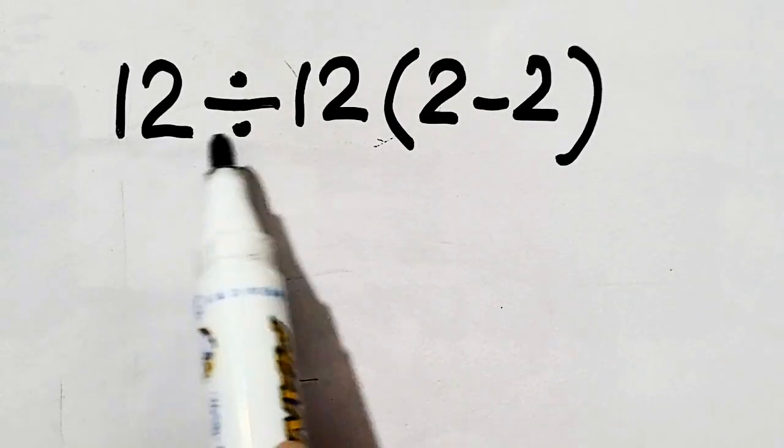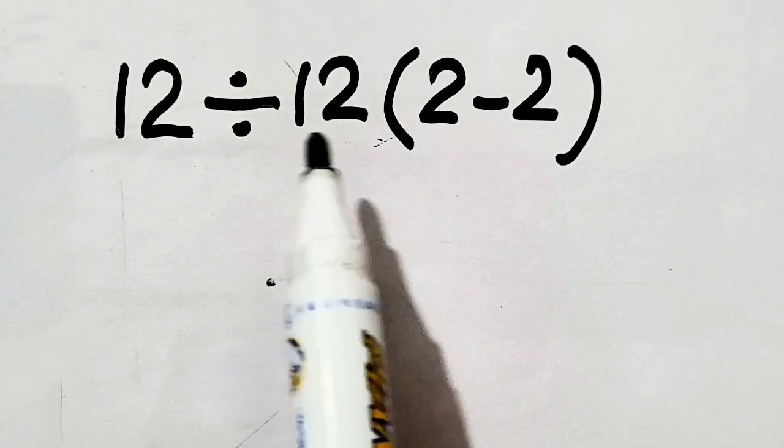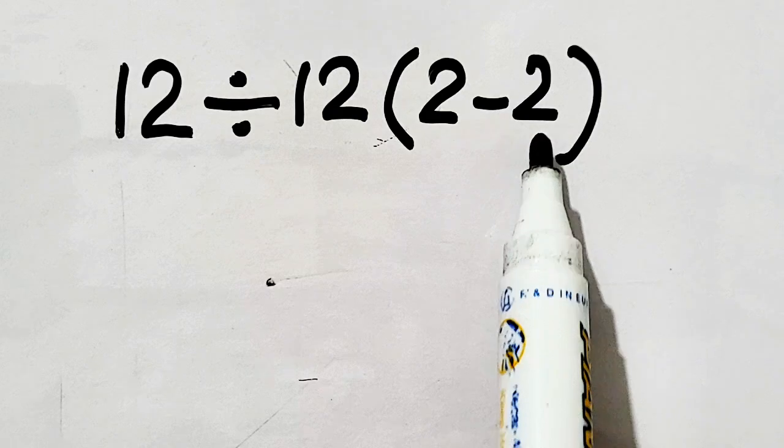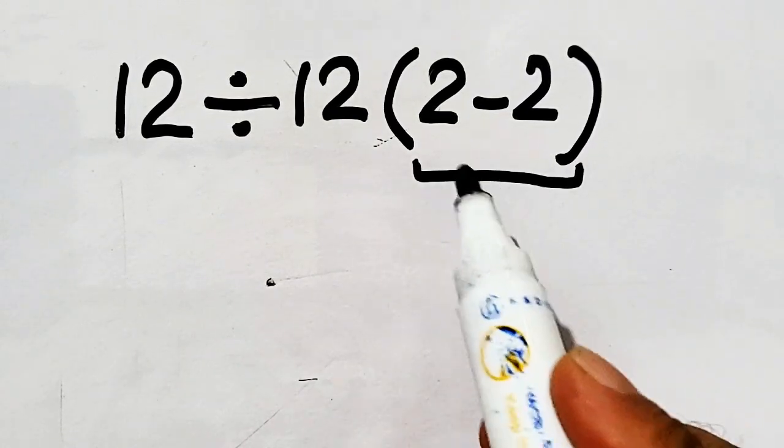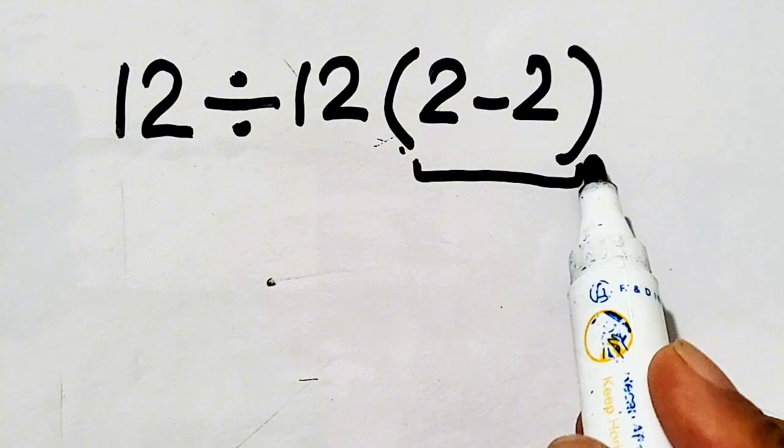Everyone, 12 divided by 12 times 2 minus 2. According to PEMDAS, first of all, we have to solve this parenthesis.